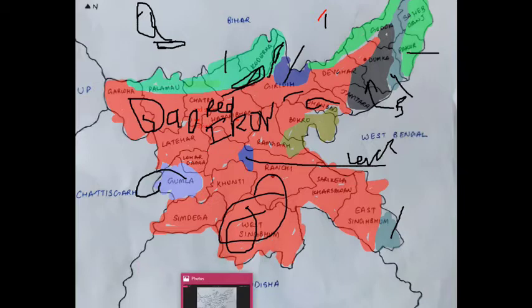Black soil has kaolin, potassium, and iron oxide as its main constituents.